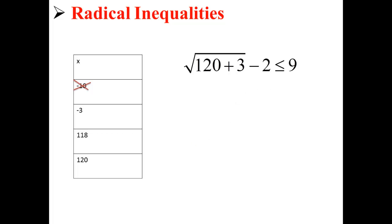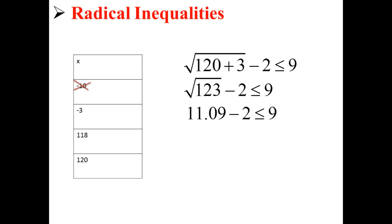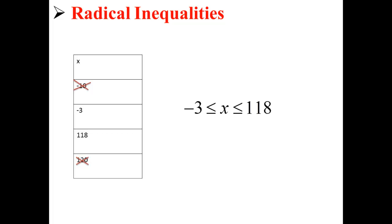Now let's try 120. This gives us √123 - 2 ≤ 9, or 11.09 - 2 ≤ 9, or simply 9.09 ≤ 9. This answer does not work. So values less than negative 3 don't work, and values greater than 118 do work. So we know that our original solution, x ≥ -3 and x ≤ 118, is correct. Any values within that range will be a valid solution to our radical inequality.